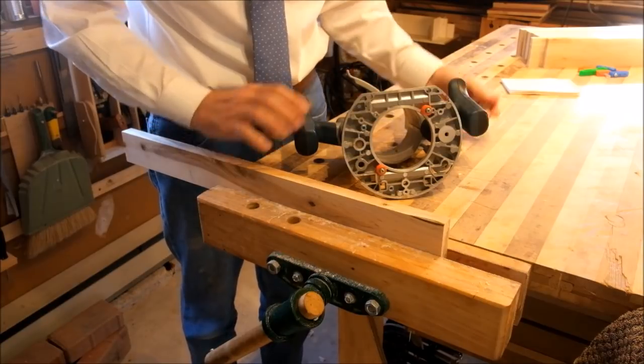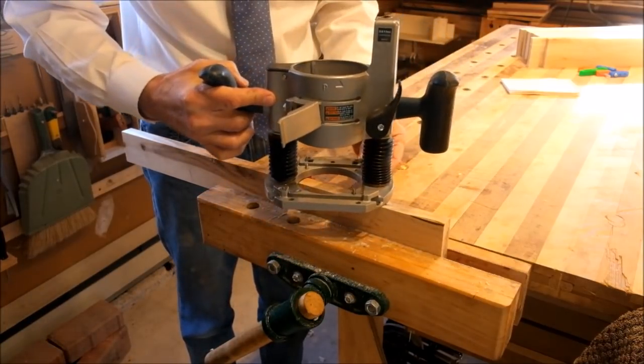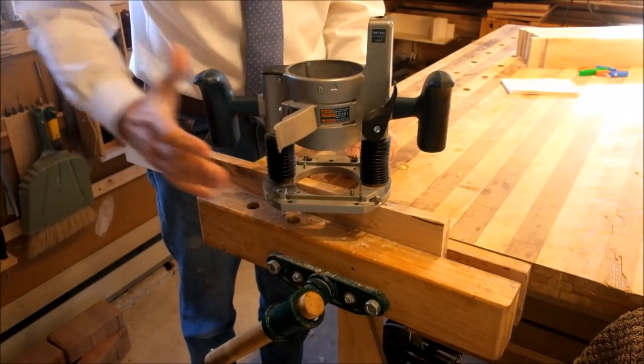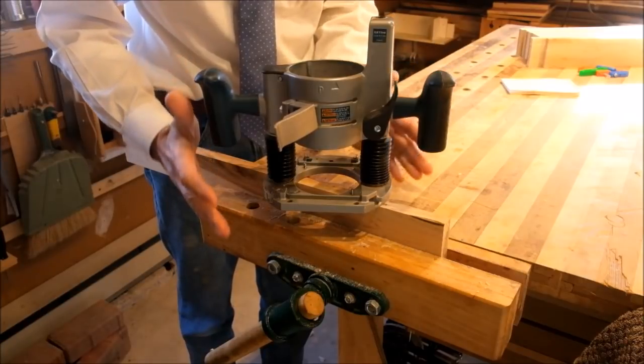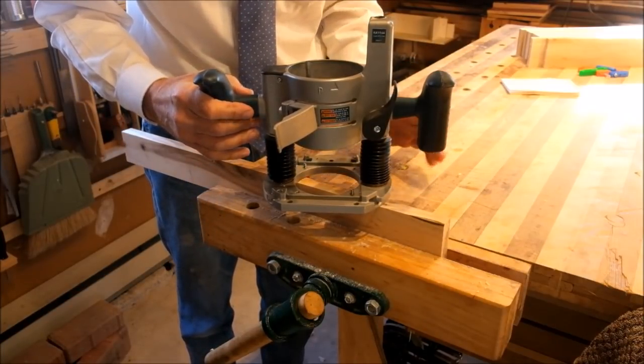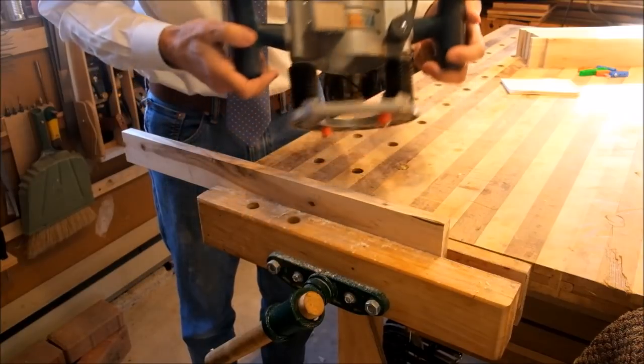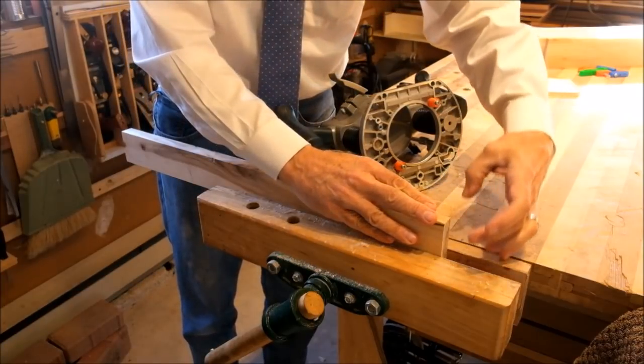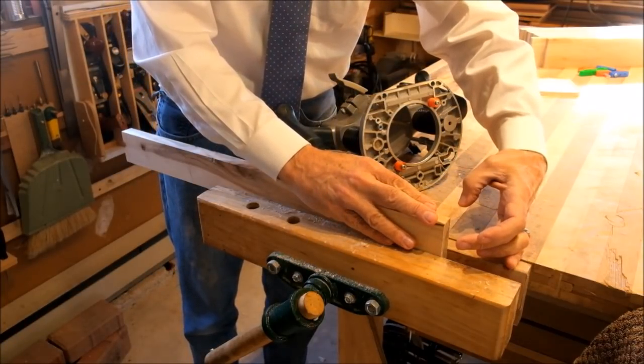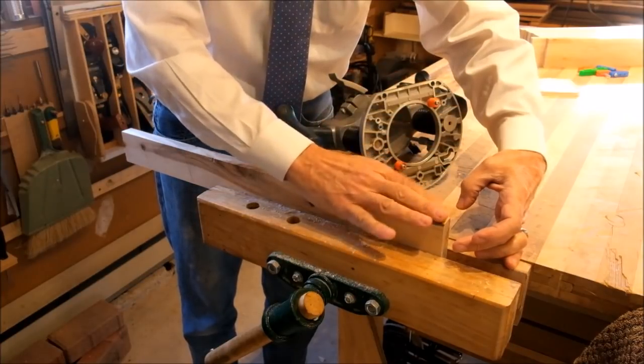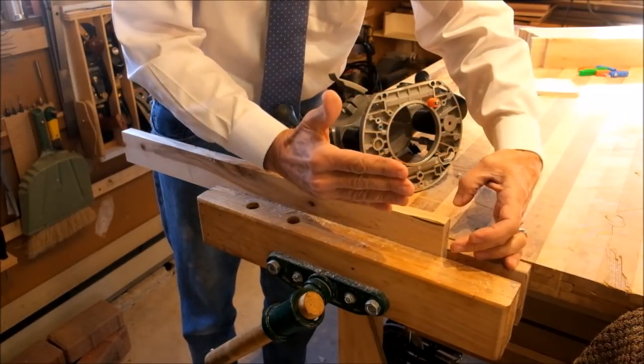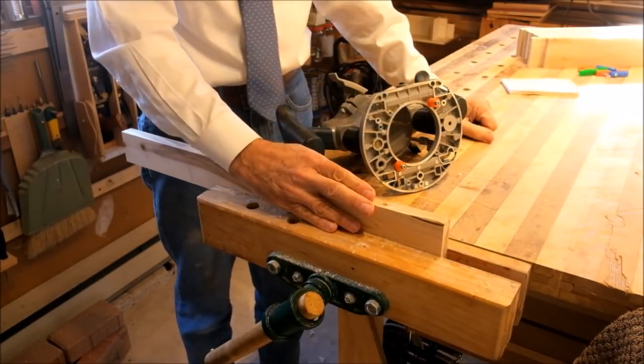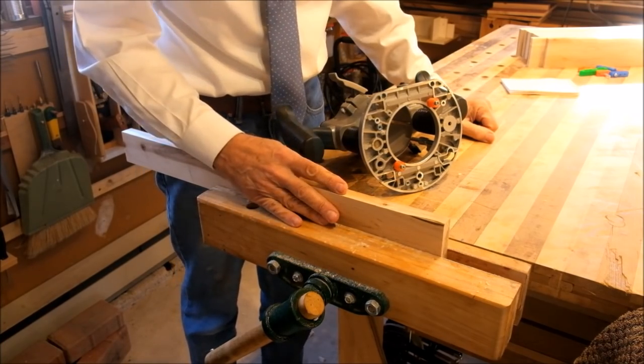Problem number three is that you're not going to want all of your mortises to be centered all of the time and that's a bit of a shortcoming of using just the two pins alone. If you're for example bringing some aprons into a table leg you're going to want the mortises in the table leg not to be in the center. You want them outbound a little bit because that lets you make a deeper mortise and use a longer tenon. So we're going to solve all three of those problems.